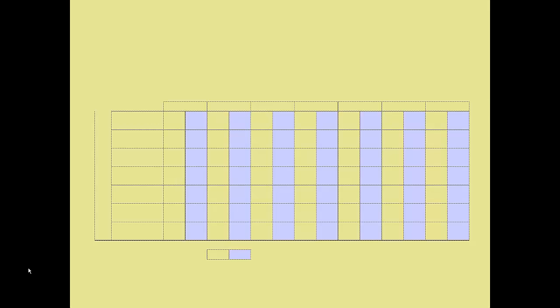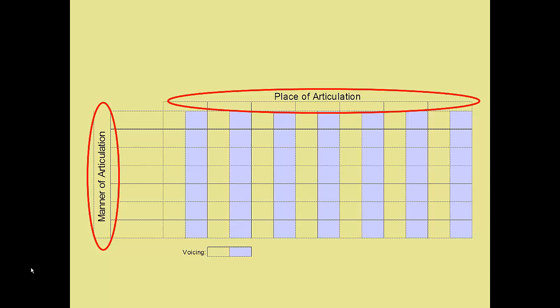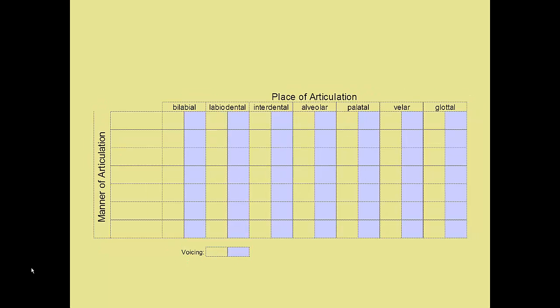Let's begin our chart with the grid outline. We can label the columns and rows according to the three features of consonant production: place, manner, and voicing. The place of articulation for consonants is the spot at which we constrict the vocal tract in some way. From left to right in this chart, we go from the lips back to the vocal folds where the vibrations of voicing are produced.